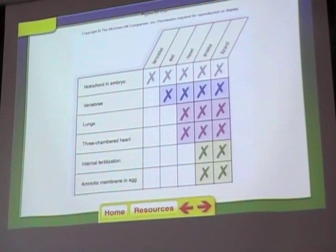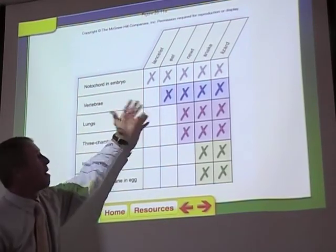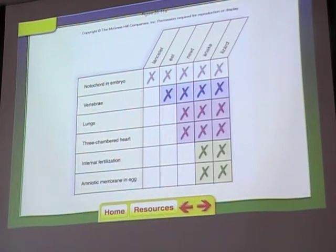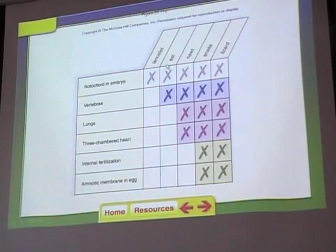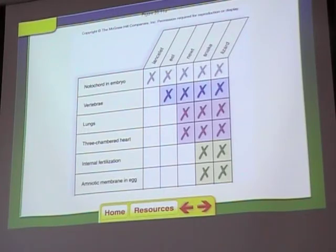Is there an organism that has a notochord and vertebrae but nothing else? Yes — the eel. The eel has the notochord and the vertebrae but doesn't have any of the other characters. So the eel is our next organism on the cladogram.